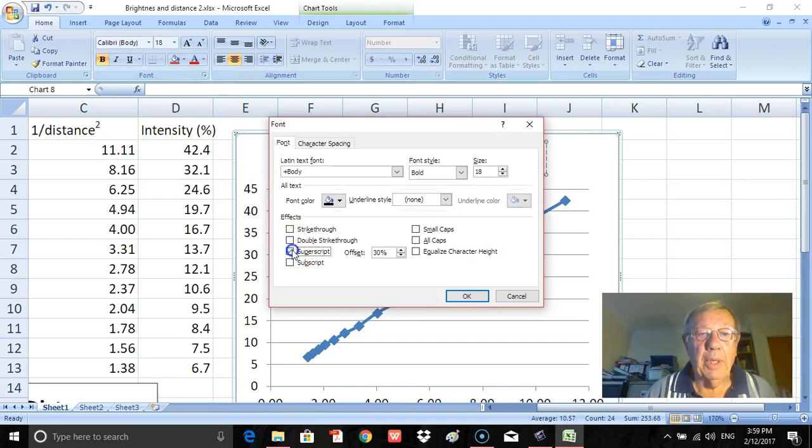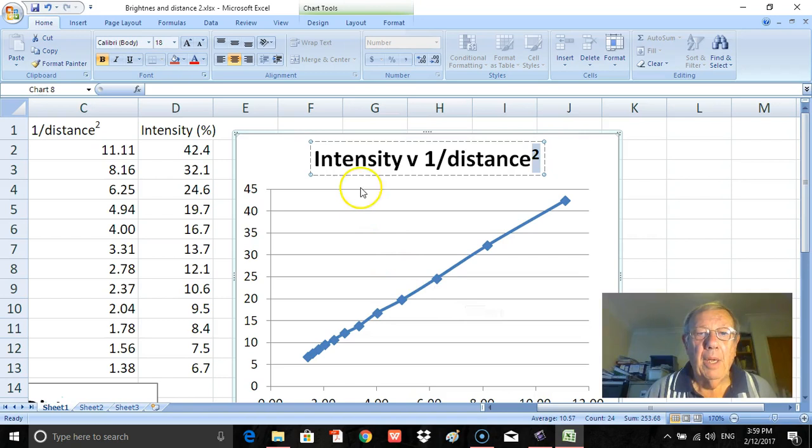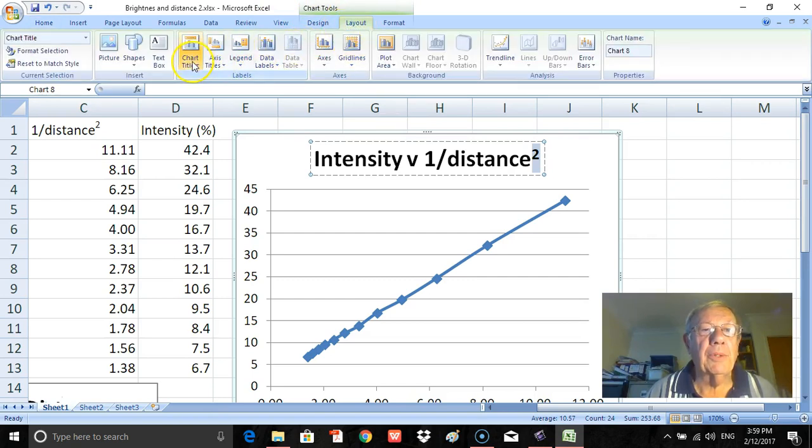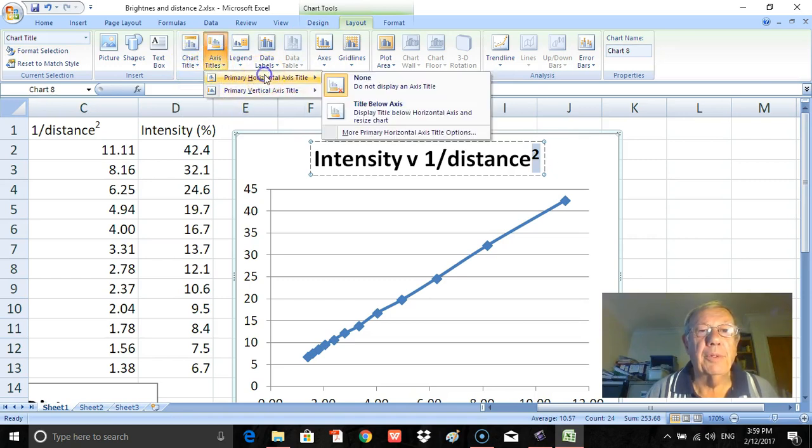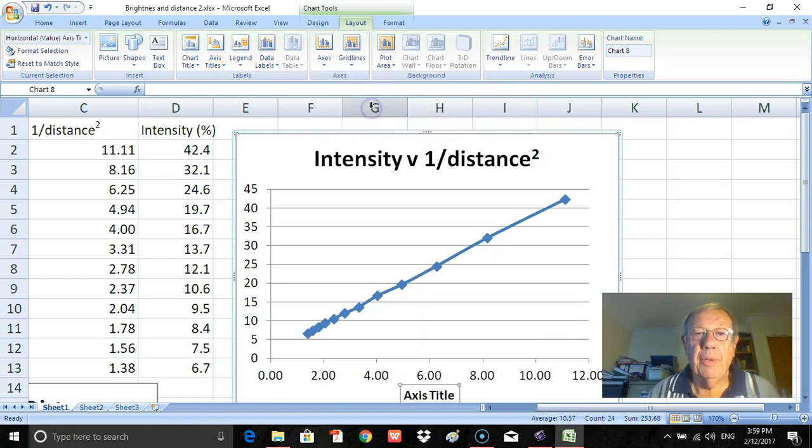Again, type the labels for down the bottom there, the x-axis. So I go up here to layout again, making sure I go across here to axis title, OK, to go to horizontal axis title, title, title below the axis. And that axis title is 1/distance².